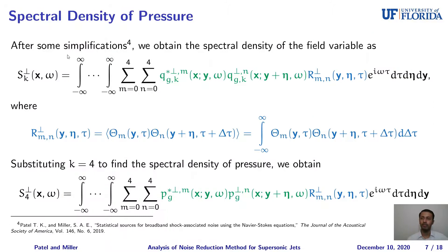After performing some simplifications, we can obtain the spectral density for a field variable as the multiplication of the vector Green's function with the two-point cross-correlation of the source terms. For obtaining the spectral density of pressure, we substitute k equal to 4, where k equal to 0 represents density, 1 to 3 represents velocity, and 4 represents pressure. So we need to find the vector Green's function of pressure and appropriate source terms for fine-scale mixing noise and shock-associated noise.